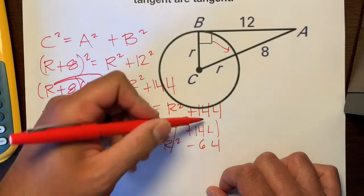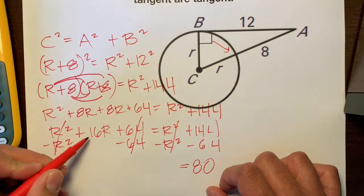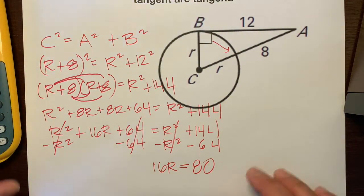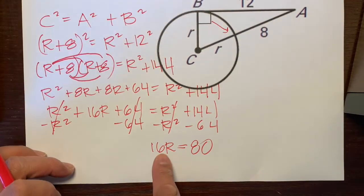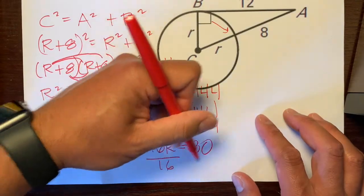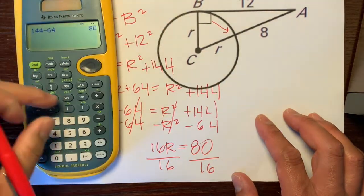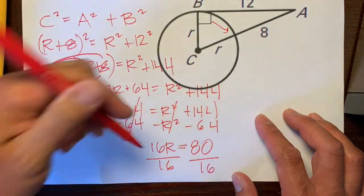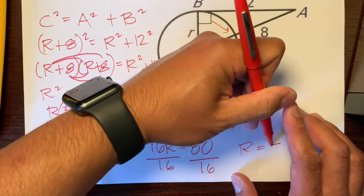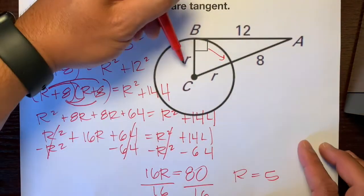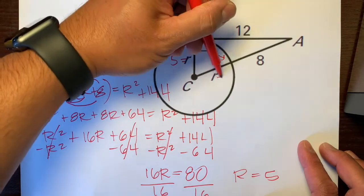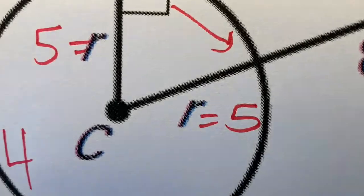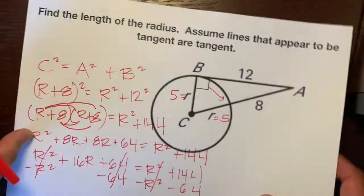This turns into 80. So we have 16r equals 80. The last step: divide both sides by 16. 80 divided by 16 is 5. So r is equal to 5. The radius equals 5. Because all radii are the same in the same circle, both radii equal 5.